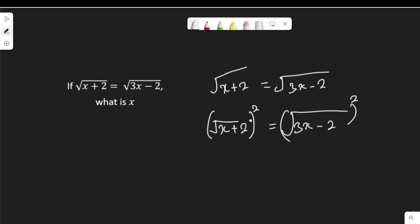Squaring this will clear out the square root sign so that I have x plus 2 is equal to 3x minus 2.